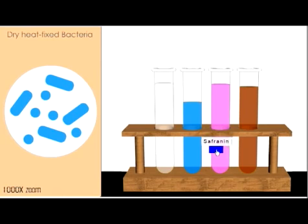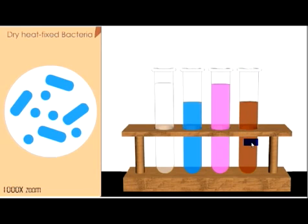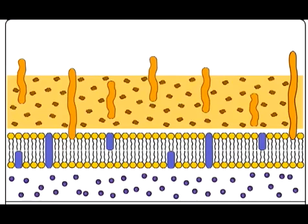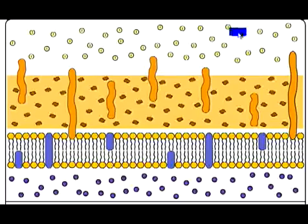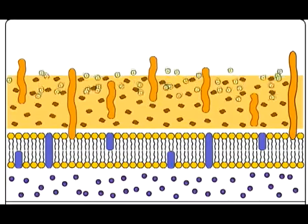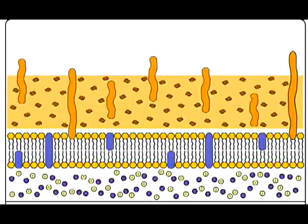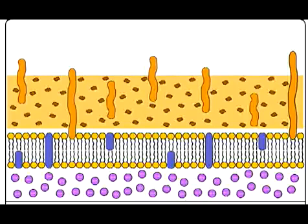The next step is to add iodine, a brownish-yellowish liquid that forms a complex with crystal violet. We add that to the slide and let it sit for about a minute. In gram-positive bacteria, the iodine molecules move through the thick peptidoglycan layer, through the phospholipid bilayer, and get trapped where the crystal violet particles are. The crystal violet and the iodine ions react to form a crystal violet-iodine complex, which is larger than either molecule alone.